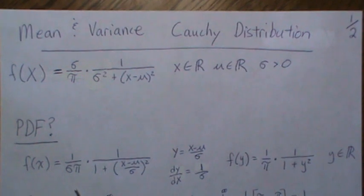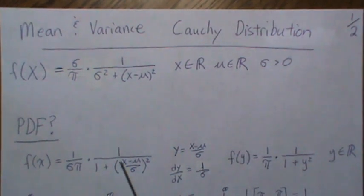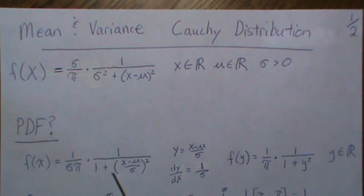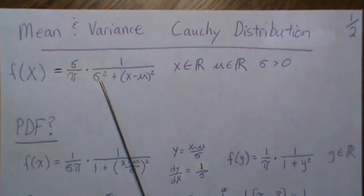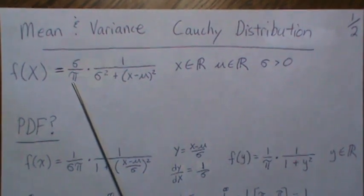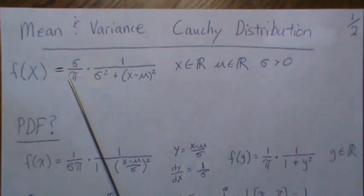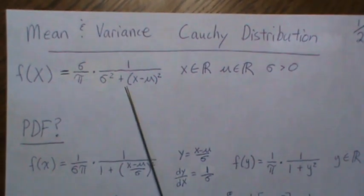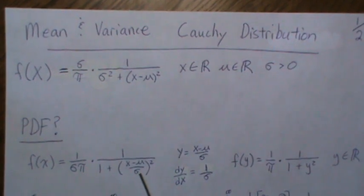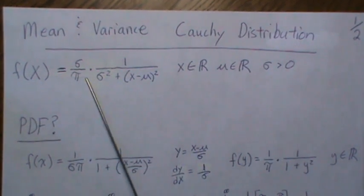So we want to know, is it a PDF? Here we take our density and we're going to make a variable change. To get here I factor out a sigma squared and then that cancels with one of those, but when you factor it out you have to divide by sigma squared here, so these densities are the same.